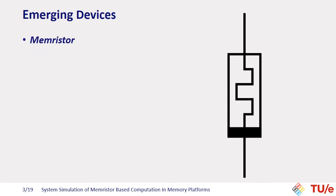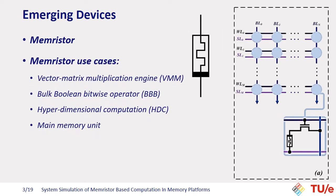A Memristor is the fourth fundamental circuit element which has a nonlinear IV characteristic. They store information as the resistance of the device rather than storing it as charge. As a single device, they can be used for RF switches and physically unclonable functions. However, our focus is on use cases where they are deployed in a crossbar structure — as a vector matrix multiplier, bulk boolean bitwise operator, hyperdimensional computer, or as a main memory unit.